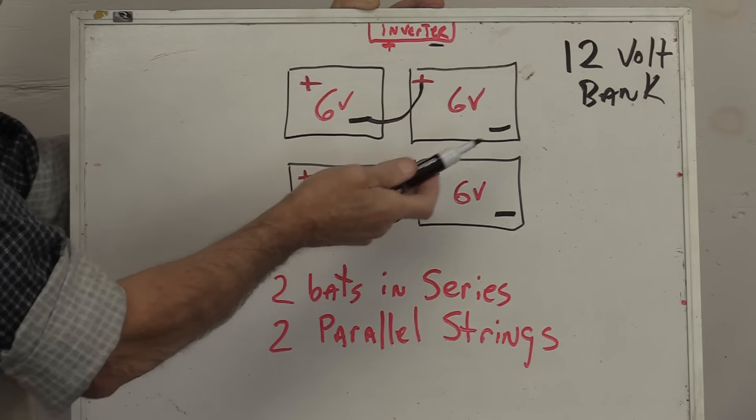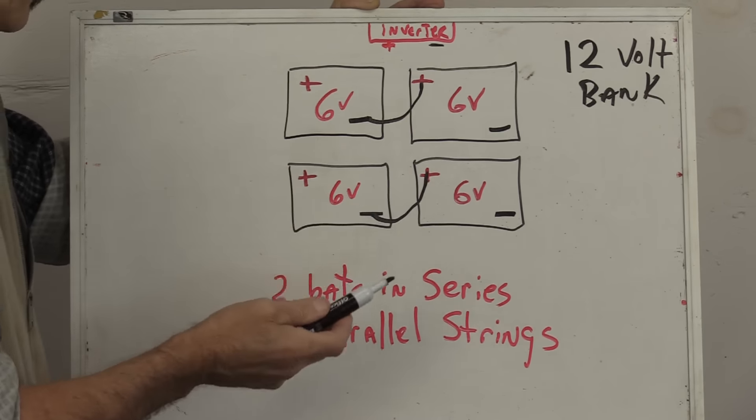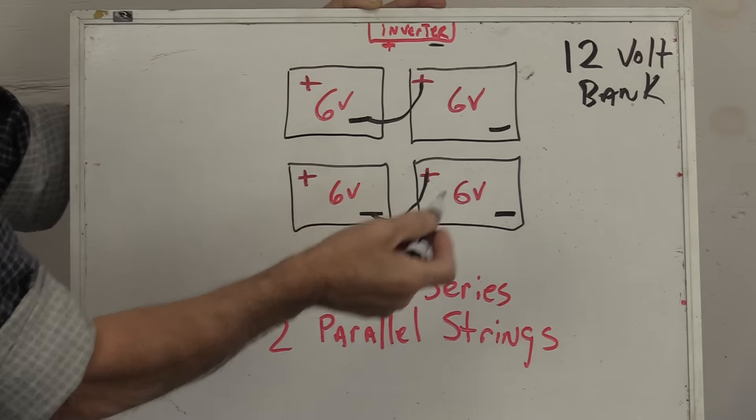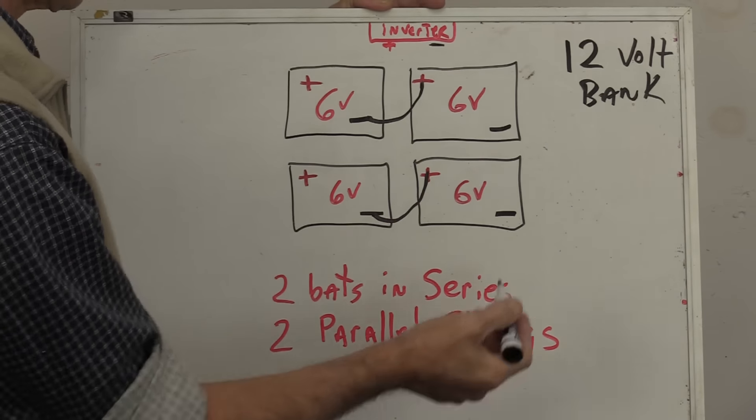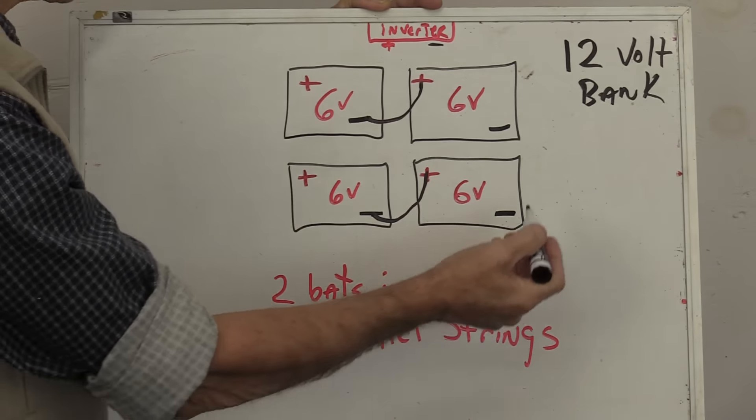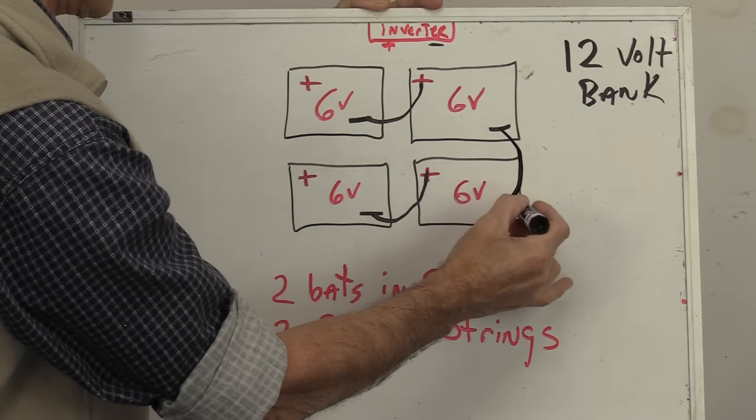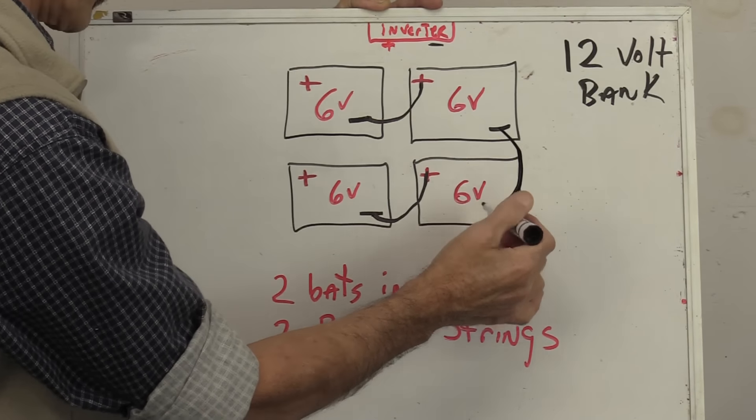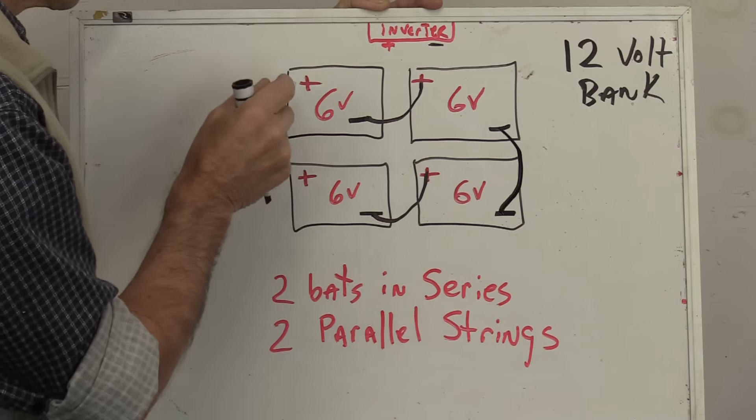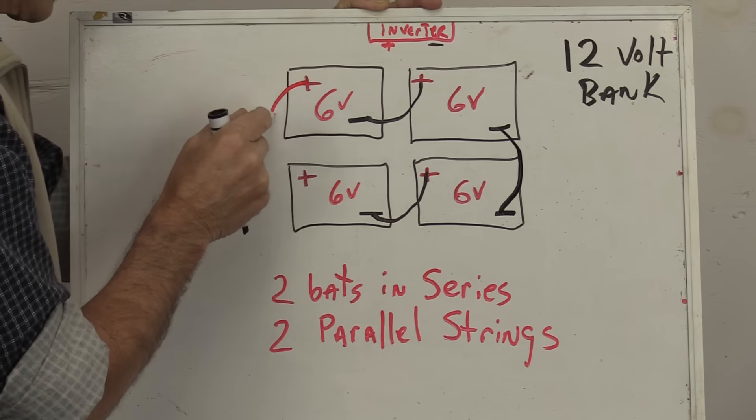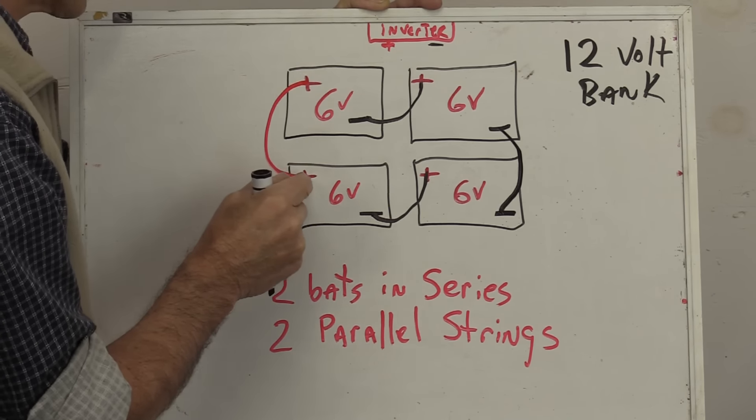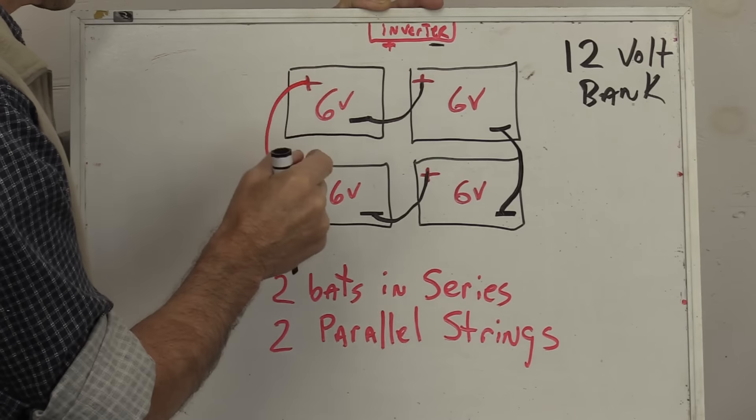The question is how do you hook these batteries together to keep everything 12 volt. So this is what we want to do. We want to take the negative post of this battery and make a connection to this negative post. Now we want to take positive on this bank and come to the positive on that battery. There we go.